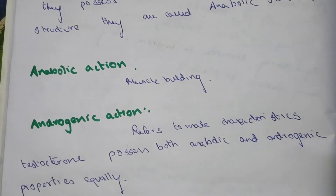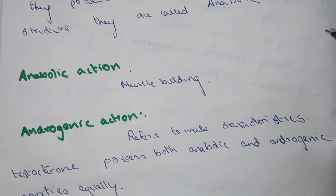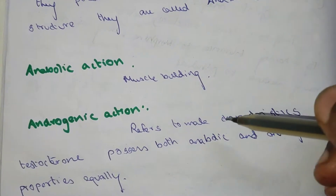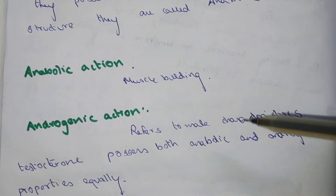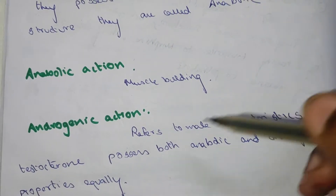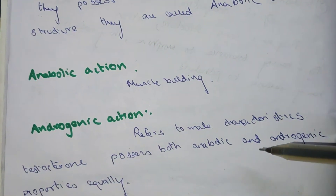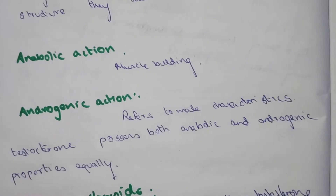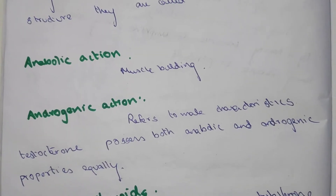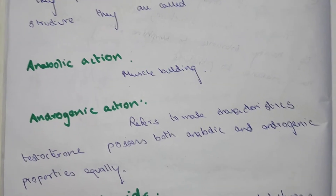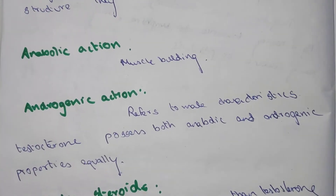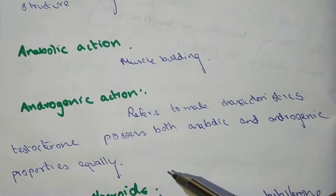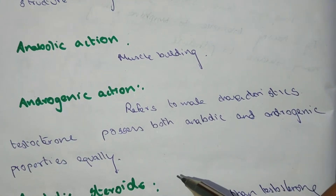Anabolic action refers to muscle building. Androgenic action refers to male characteristics. Testosterone possesses anabolic and androgenic properties equally, as it is the derivative of testosterone with both androgenic and anabolic properties.